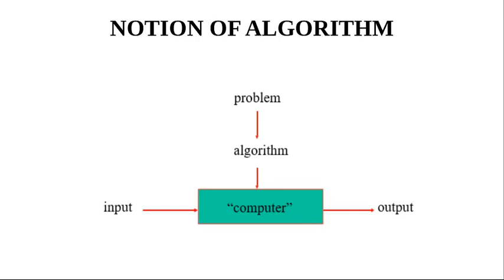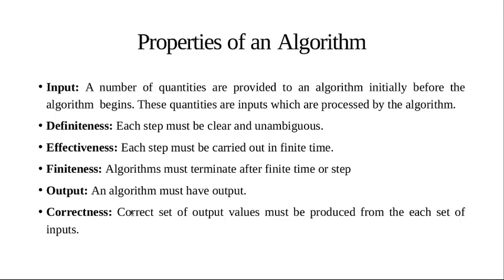Algorithm notation: We have input from the computer and produce output to solve the problem. Properties of an algorithm include: having necessary input, having clear steps, having definite steps, finishing in finite time, producing output results, and being correct.